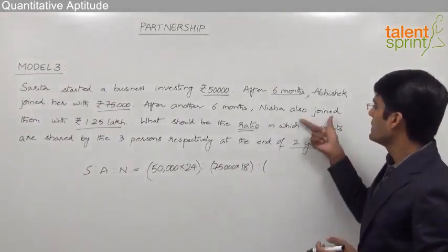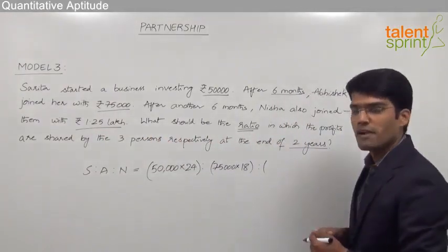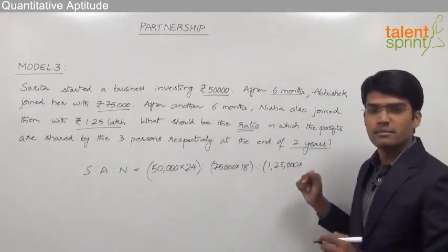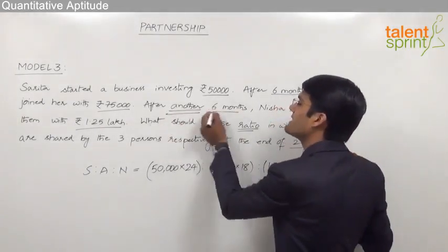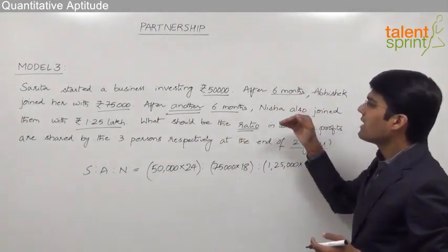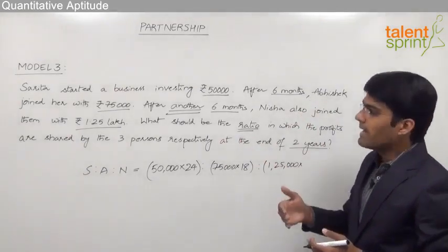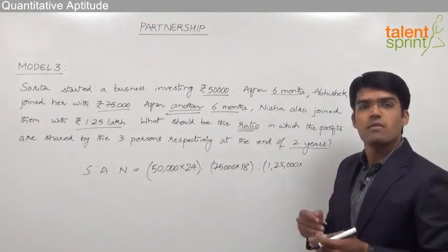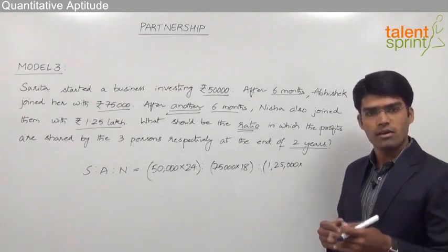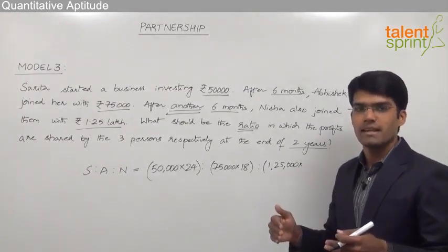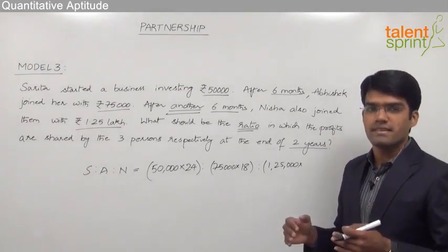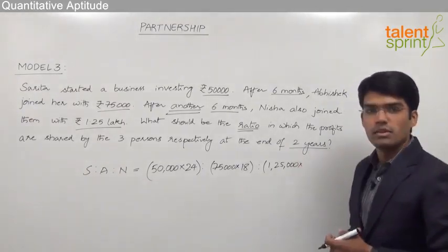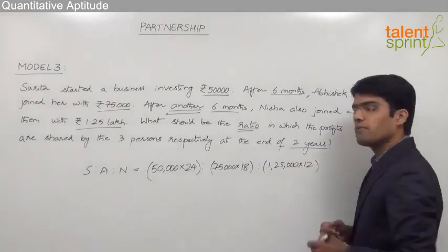The third person here is Nisha. We know that Nisha joined with rupees 1.25 lakhs, that is 1,25,000. But she joined after another 6 months. The word 'another' plays a very important role here. We know that Abhishek had already joined 6 months late, and then after Abhishek joined the business, Nisha joined after another 6 months. So Nisha was not present for the first 12 months in the business — 6 plus 6 — which means she was available only for the last 12 months.